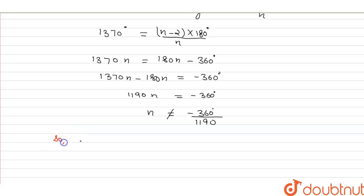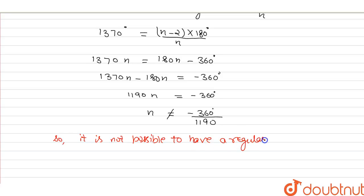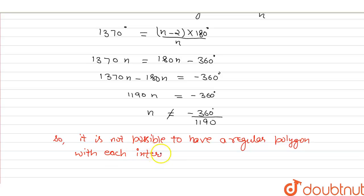So it is not possible to have a regular polygon with each interior angle as 1370 degrees. Thank you.